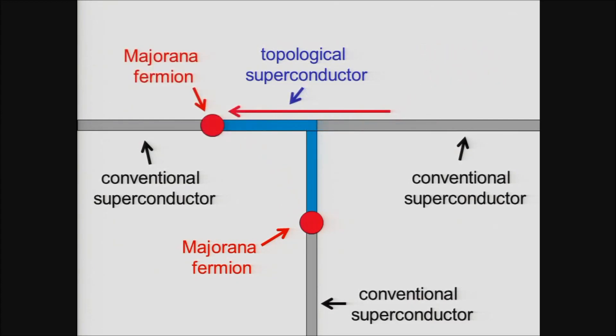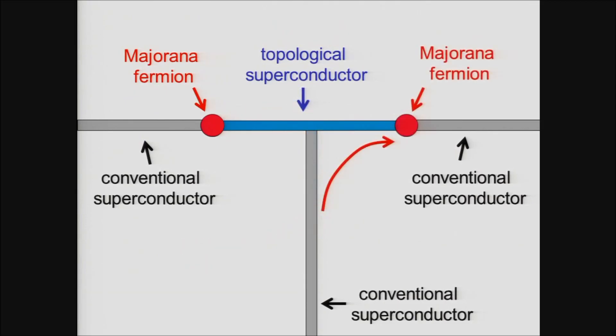Then move the Majorana fermion that was initially on the right over to the left, and then unpark the first guy. And by that way, we have exchanged the positions of the two particles without them ever coming close to one another. That's just what we need to do to perform an operation on topologically encoded data. Now, that hasn't been done in experiments yet, but we're hopeful that it can be in the next few years.